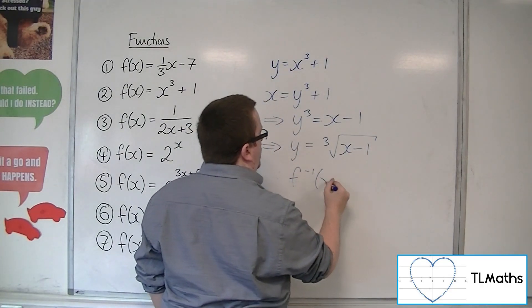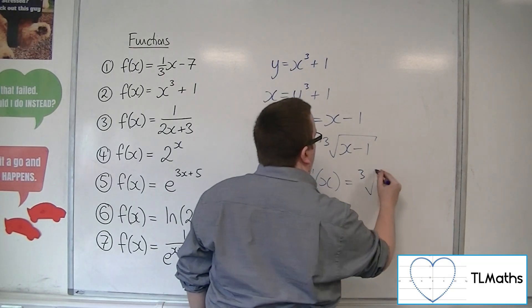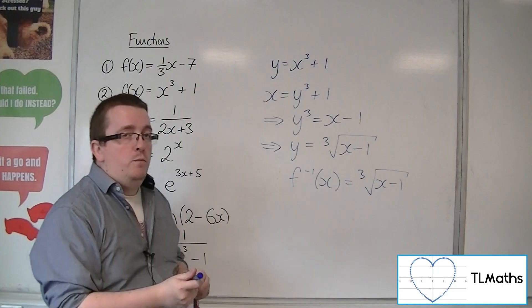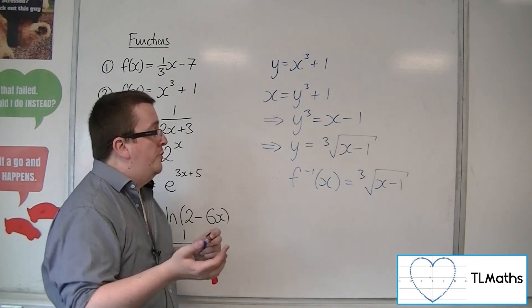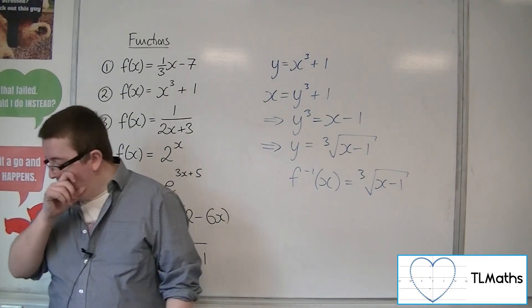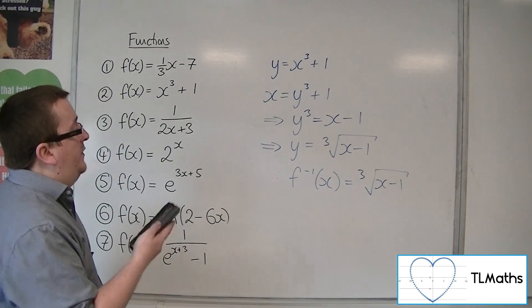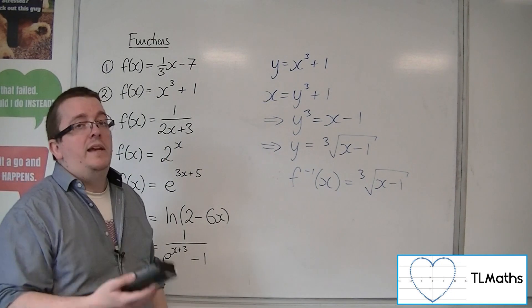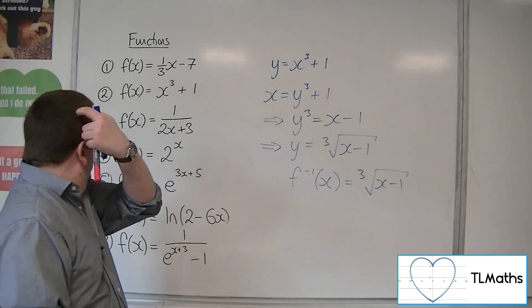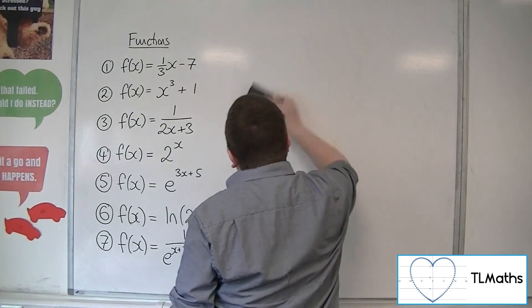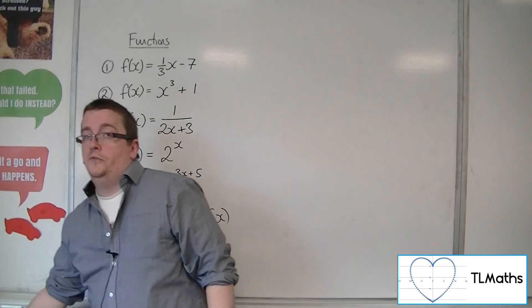So the inverse function is the cube root of x - 1. Now remember, when you're taking a cube root, you don't bring in a plus minus like you would for a square root. Otherwise we would have problems on our hands, because then the inverse function wouldn't be a function. We can't have the inverse function leading to two values.